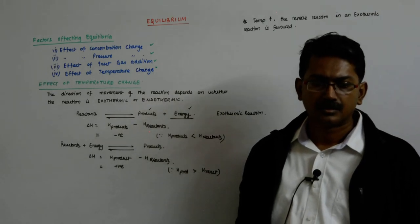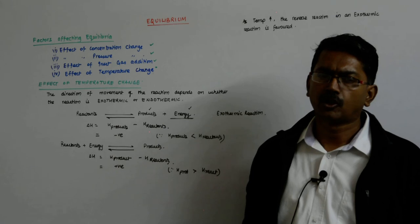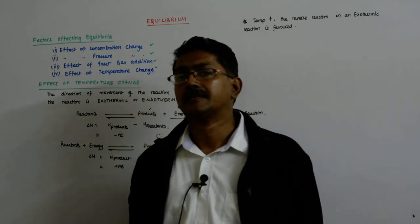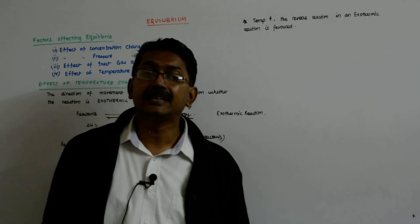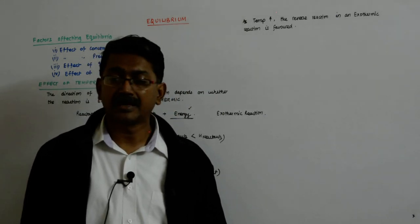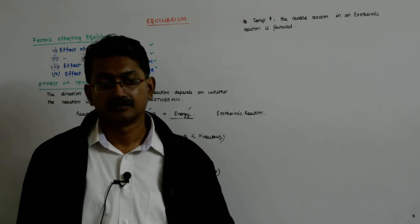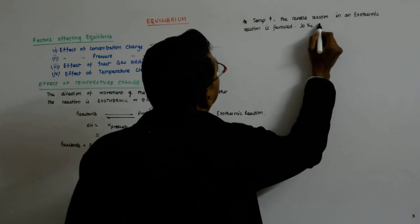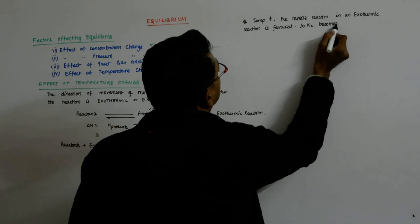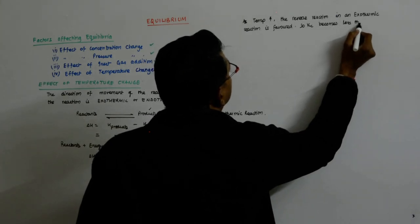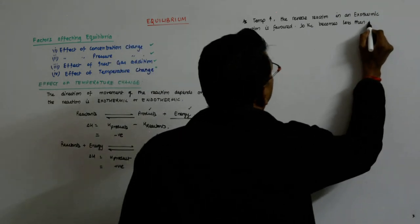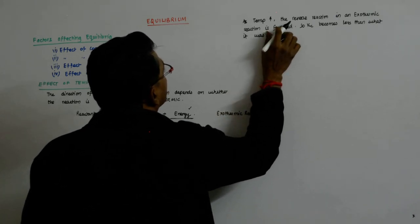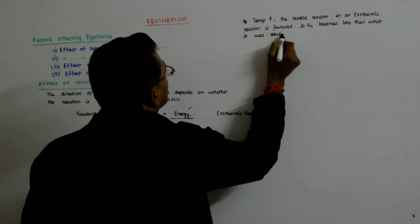So your products become lesser and lesser and your reactants become more and more. KC becomes less than what it was earlier.